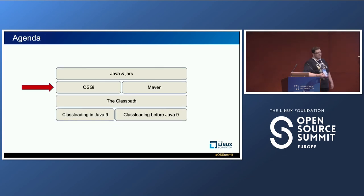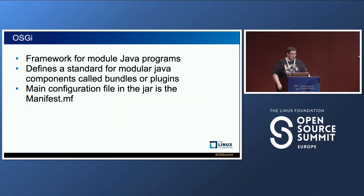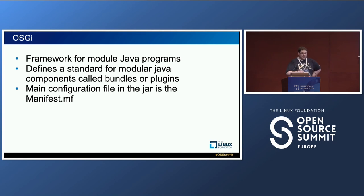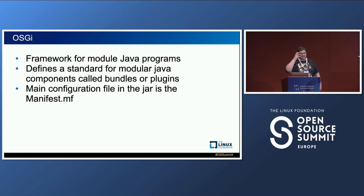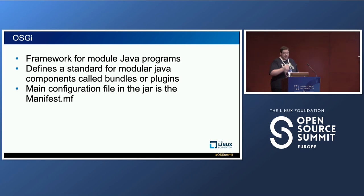The next topic is OSGi — a framework for modular Java programs. It was created to solve a problem where there was no modularity in Java back then; it was monolithic. The first version dates as early as 1999. It defines a specific kind of manifest and handshake that various bundles use so they can interact in a more modular way. The main configuration file for OSGi is the manifest file.